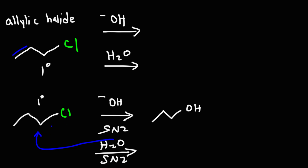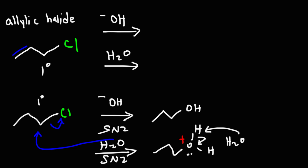With water and propyl chloride, it's going to be an SN2 reaction. Water is going to attack from the back, kicking out the leaving group. We'll get an oxonium ion, and then another water molecule will come in and remove the hydrogen. In the end, we'll get the same product, but it happens in two steps as opposed to one.